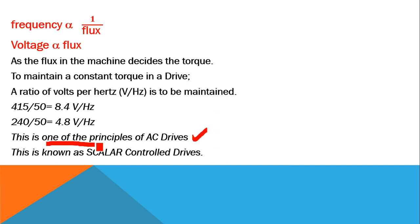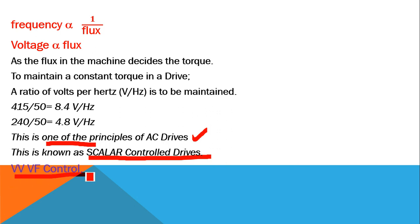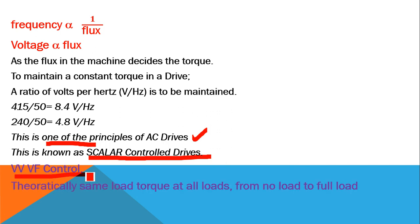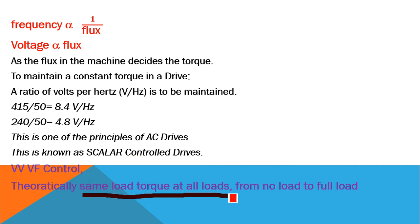This type of drive control is known as scalar controlled drives, or otherwise known as variable voltage variable frequency (VVVF) control. Theoretically, with this method of control, we get almost the same torque at all conditions - from no load to full load, the motor torque will not vary. In a conventional method, if you are starting the motor, the torque may be different. But the advantage of VVVF control or VFD in the scalar method is that it will have constant torque from no load to full load.